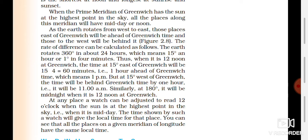The rate of difference can be calculated as follows: the Earth rotates 360 degrees in about 24 hours, which means 15 degrees per hour and 1 degree in 4 minutes. So at 15 degrees east of Greenwich, the time will be 15 × 4 = 60 minutes, i.e., 1 hour ahead of Greenwich time — meaning 1 pm. But at 15 degrees west, the time will be 11 am. Similarly, at 180 degrees it will be midnight when it is 12 noon at Greenwich.